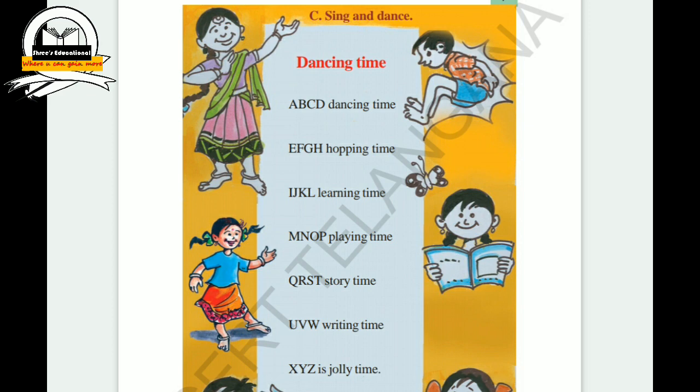The C bit is called Dancing Time: Sing and Dance. The poem goes: A B C D, dancing time. E F G H, hopping time. I J K L, learning time. M N O P, playing time. Q R S T, story time. U V W, writing time. X Y Z, jolly time.